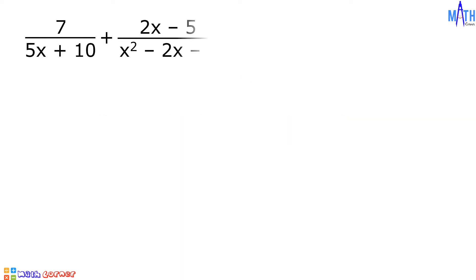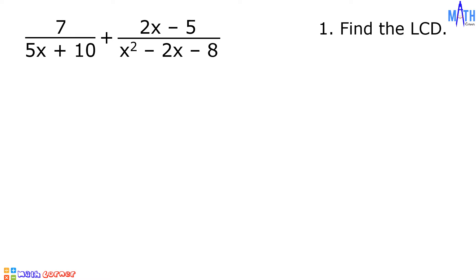7 over 5x plus 10, plus 2x minus 5 over x squared minus 2x minus 8. First step, let us find the LCD or the least common denominator.